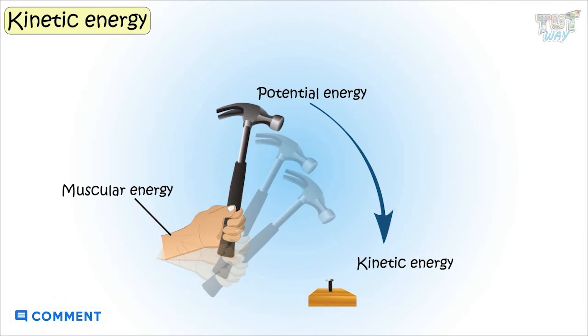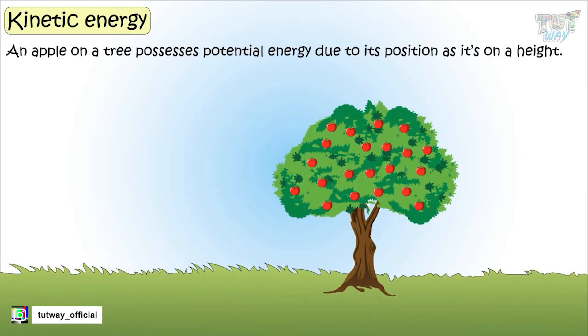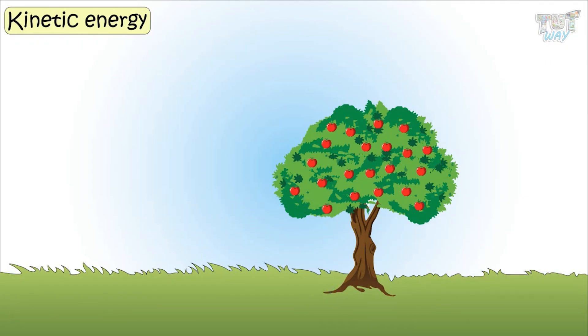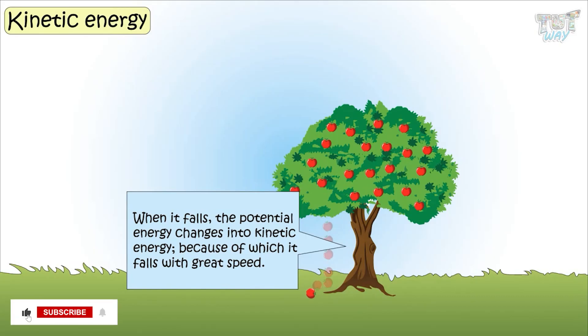Here are some examples where potential energy changes into kinetic energy. An apple, when on a tree, possesses potential energy due to its position as it's at height. And when it falls, this potential energy changes into kinetic energy, because of which it falls with great speed.